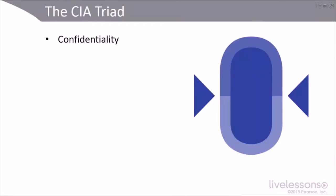Let's start with confidentiality. Confidentiality assures that no one, except the intended recipient or owner, can read the data at rest or data in use — resident or in memory — or data traversing the wired or wireless medium. Encryption is often used to guarantee confidentiality. However, we don't always have to use encryption to get confidentiality.